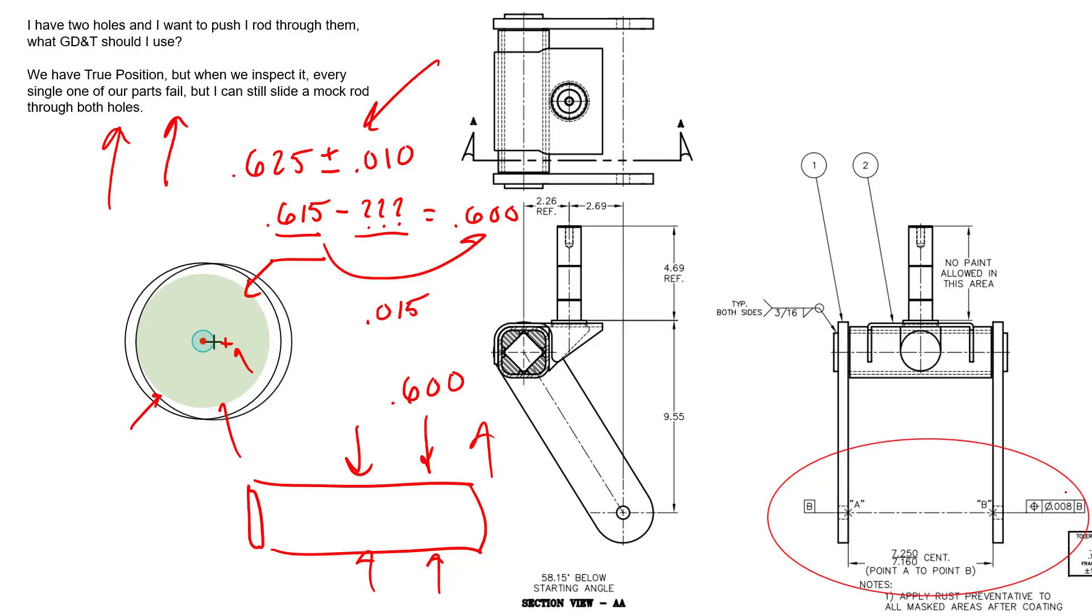So, hopefully that helps kind of clarify some things. Now, there are definitely alternatives as I mentioned. You could identify these features up here as datum features that control the 6 degrees of freedom, and then you can control the position of this hole and the position of this hole as well to the same datum reference frame. And now we are also controlling coaxiality back to the same datum references. Obviously, these would go away and become basic dimensions.